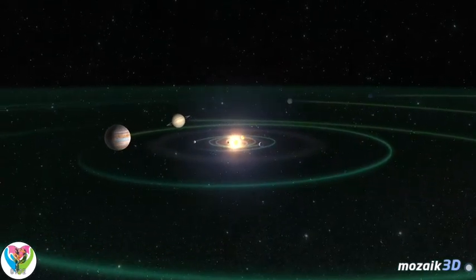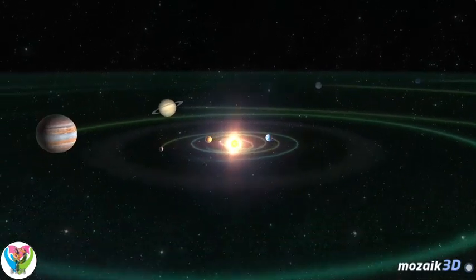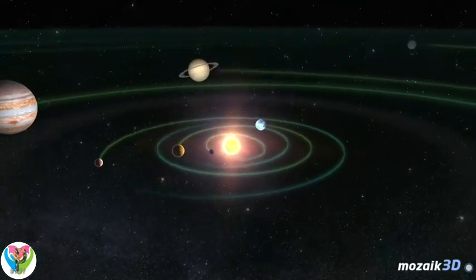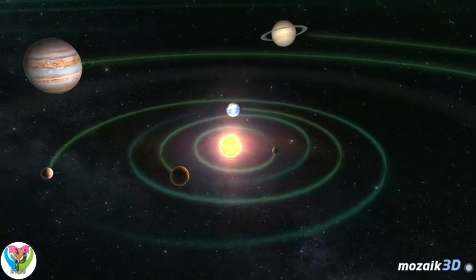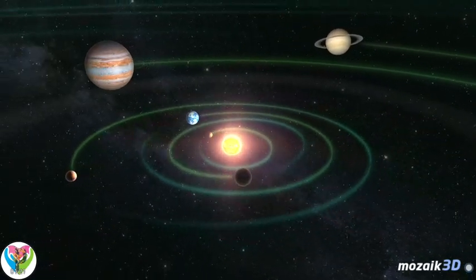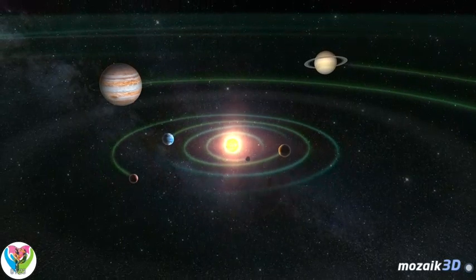The solar system consists of the Sun, the planets, the moons of the planets, asteroids and comets, meteorites and interplanetary matter, i.e. dust and gas.